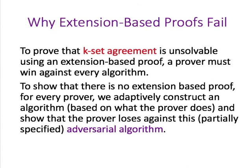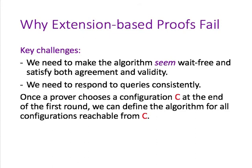To show that there is no extension-based proof, for every prover we adaptively construct an algorithm based on what the prover does, and show that the prover loses against this partially specified adversarial algorithm. As well as making the algorithm seem wait-free and correct, we can't let the prover know that we are cheating. An outline of how this is done appears in our brief announcement in the proceedings. A full proof for the NIIS model is in our STOC 2019 paper, and a full proof for the NIS model is in the most recent version of our paper on arXiv and on my webpage.